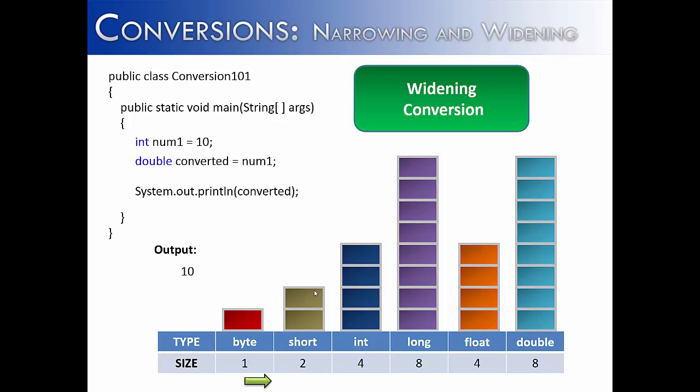It doesn't just have to be with bytes to other data types. It can be with something like an int into a double, which is what we've done here. It can be an int into a long, which we've done here. It's important to remember that when you're doing widening conversions, you're always going from a smaller data type into a larger data type.